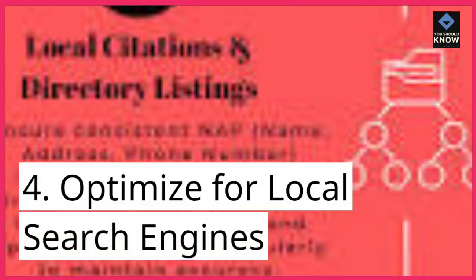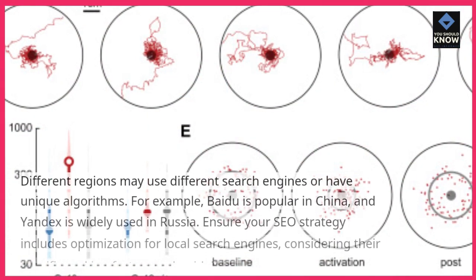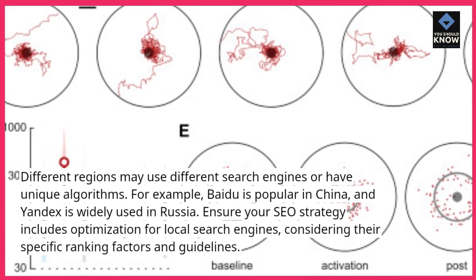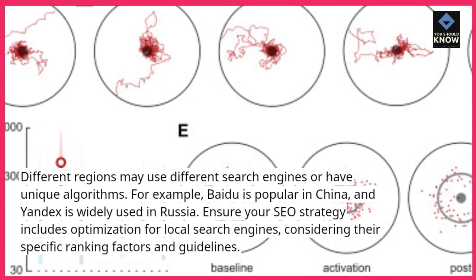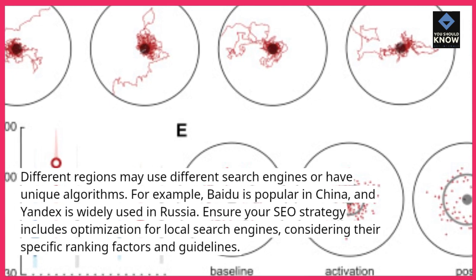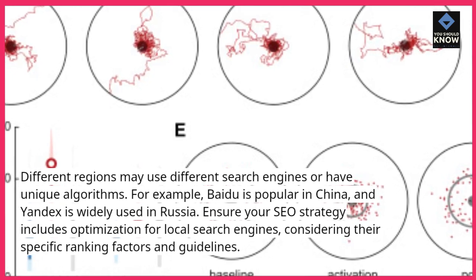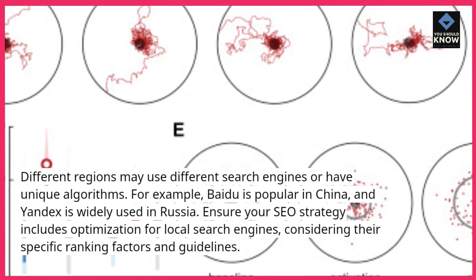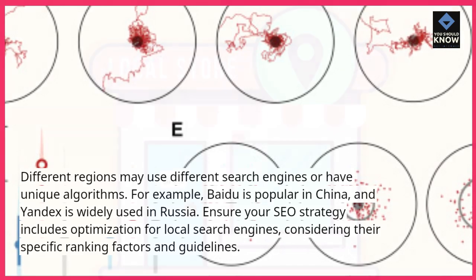4. Optimize for local search engines. Different regions may use different search engines or have unique algorithms. For example, Baidu is popular in China, and Yandex is widely used in Russia. Ensure your SEO strategy includes optimization for local search engines, considering their specific ranking factors and guidelines.